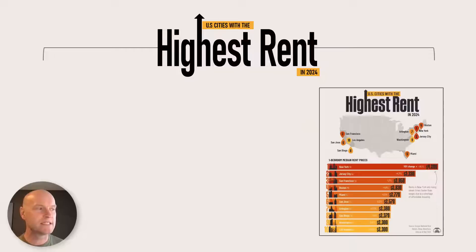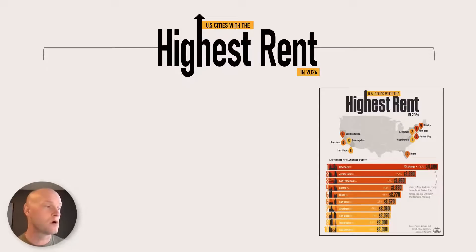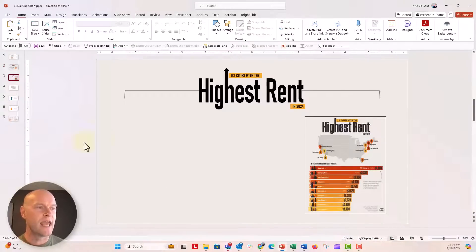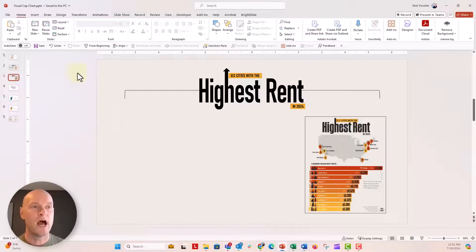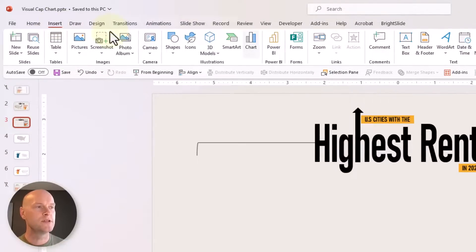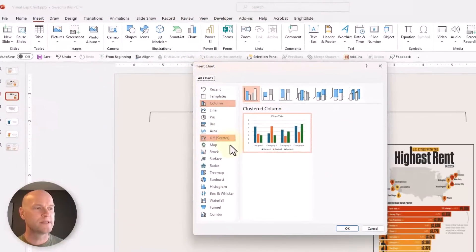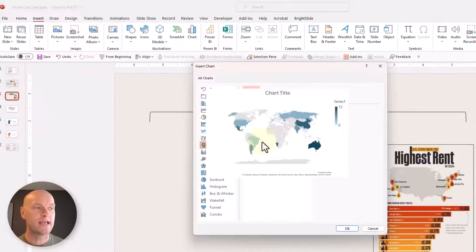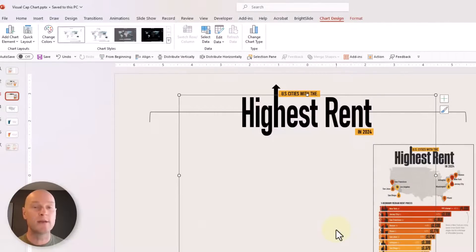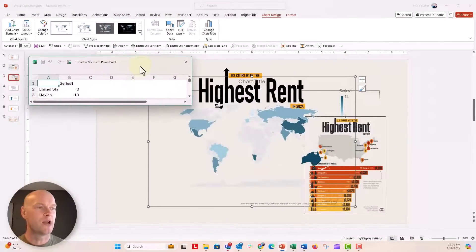We're going to go over to our blank slide. I have the Visual Capitalist screenshot there just for reference, because we might use the eyedropper tool to pull some colors from it. To insert the map, go to the Insert tab, then the Chart menu, and go down to the Map function. Excel and PowerPoint have a great filled map feature — click that map and say OK, and it will default to a world map on your slide.